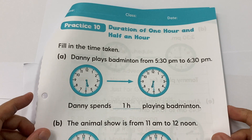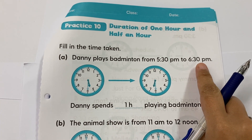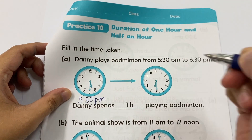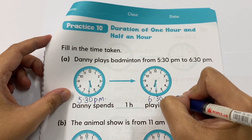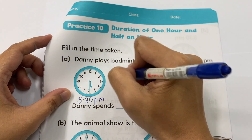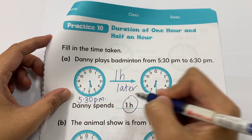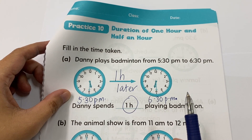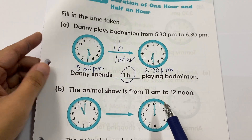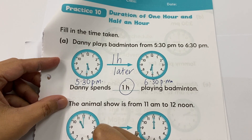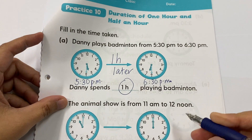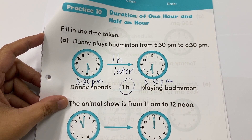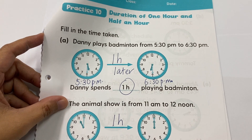Now for Practice 10, they give you the time and ask you to find the duration. Danny plays badminton from 5:30 p.m. and ends at 6:30 p.m. From 5:30 to 6:30 is one hour — that's the duration. Next, the animal show is from 11 a.m. to 12 noon — 12 noon means 12 p.m. From 11 to 12, the duration is one hour.